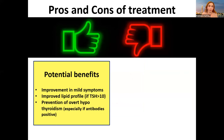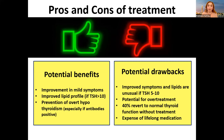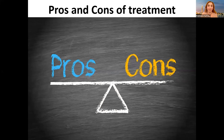Here you can see the pros and cons of treatment. Potential benefits include improvement in mild symptoms, improving lipid profile (this does not occur except if TSH is above 10), and preventing overt hypothyroidism especially if antibodies are positive. On the other hand, there is a list of potential drawbacks if you treat when not indicated: improved symptoms and lipids are unusual, potential for overtreatment, and 40 percent revert to normal thyroid — which is a very good percentage — so we can wait.